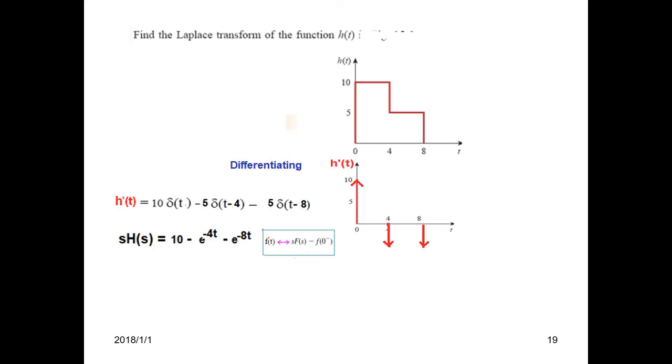As in the previous example, this will be e^(-4s) and this will be e^(-8s). I forgot to write 5, so there will be 5 here and a 5 here.